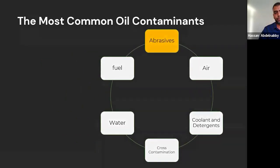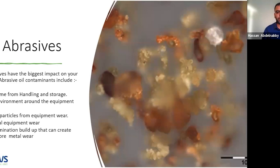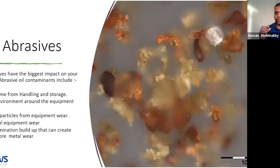Abrasives are a huge enemy. Dust can come to your equipment from the environment — I work in a tissue mill, so we have fine dust from the pulp itself that can contaminate our lubrication units. It can come from storage, handling, transportation — every aspect of the environment is trying to get inside your equipment. Metal particles can come from normal wear, but some build up and fit inside the oil film, creating a three-body abrasion that increases the wear rate of the metal itself.